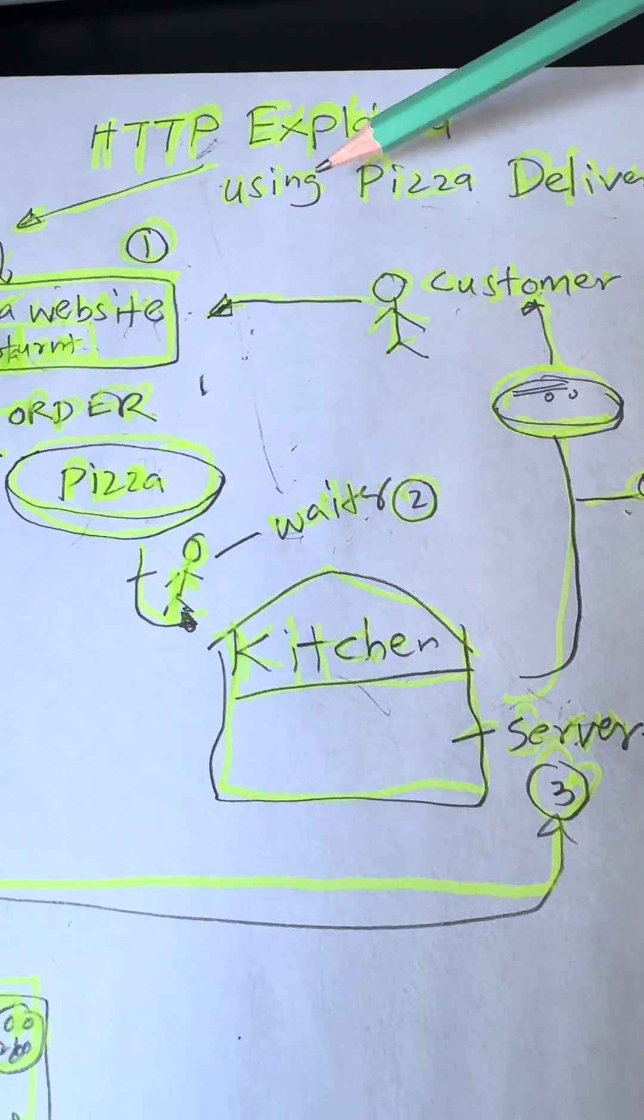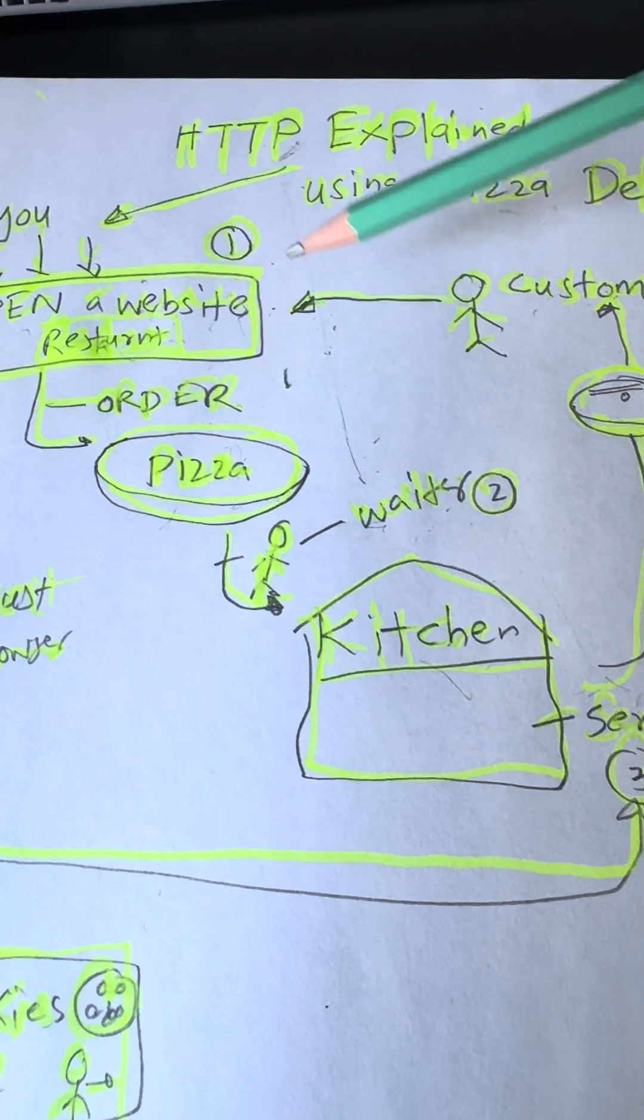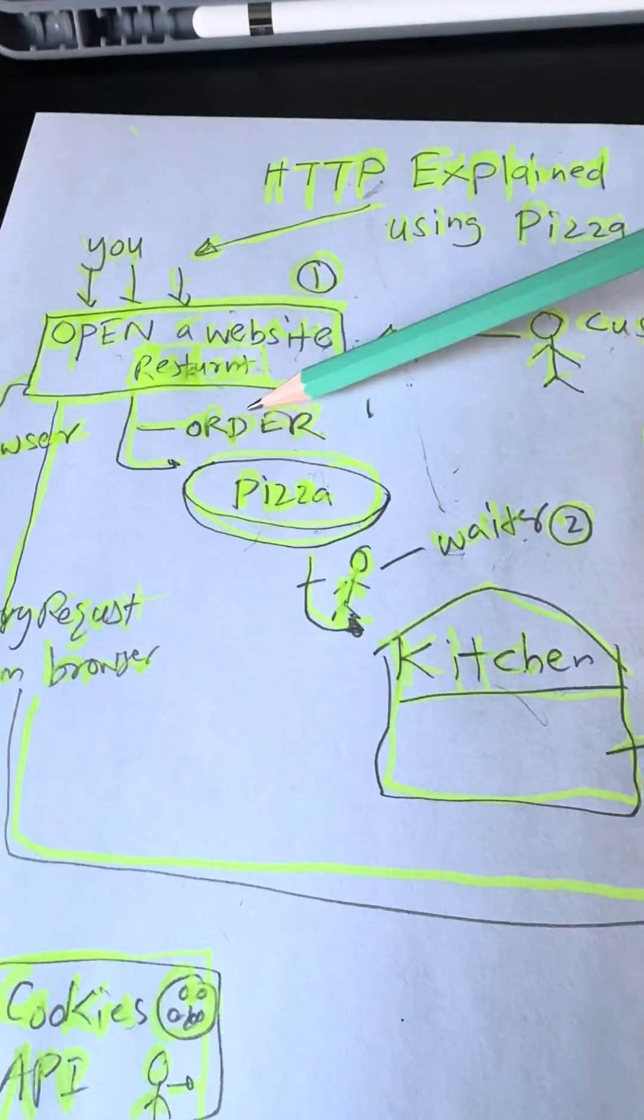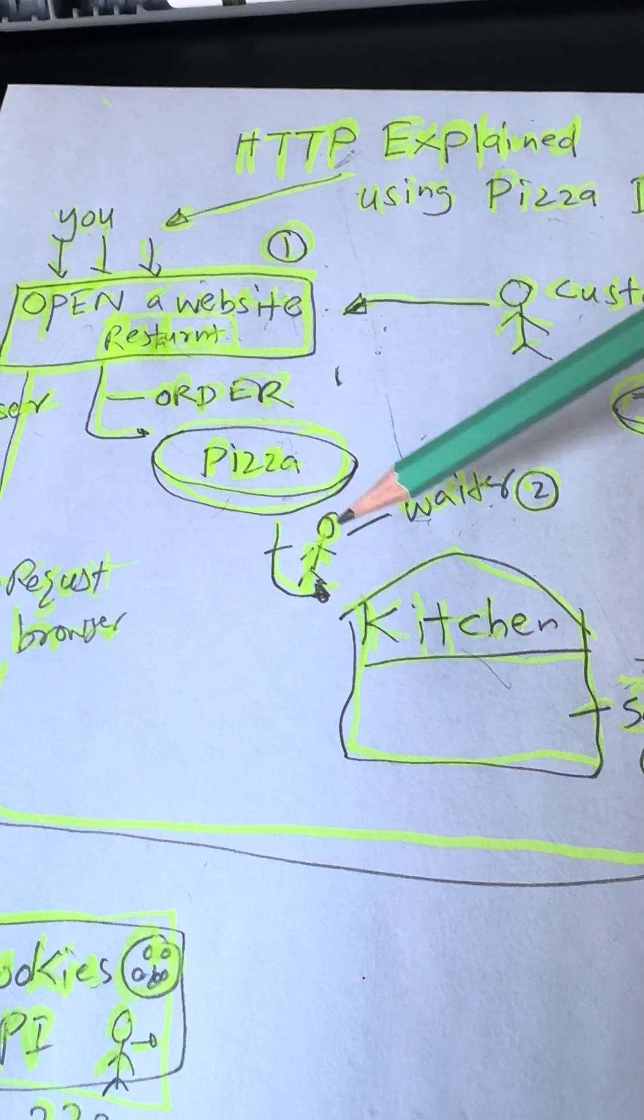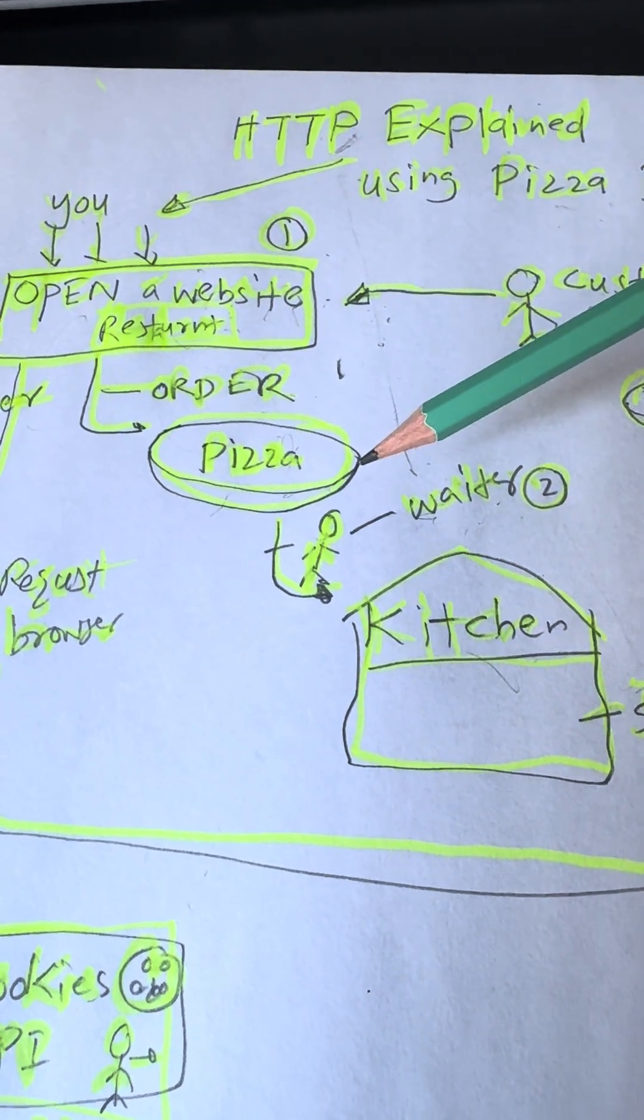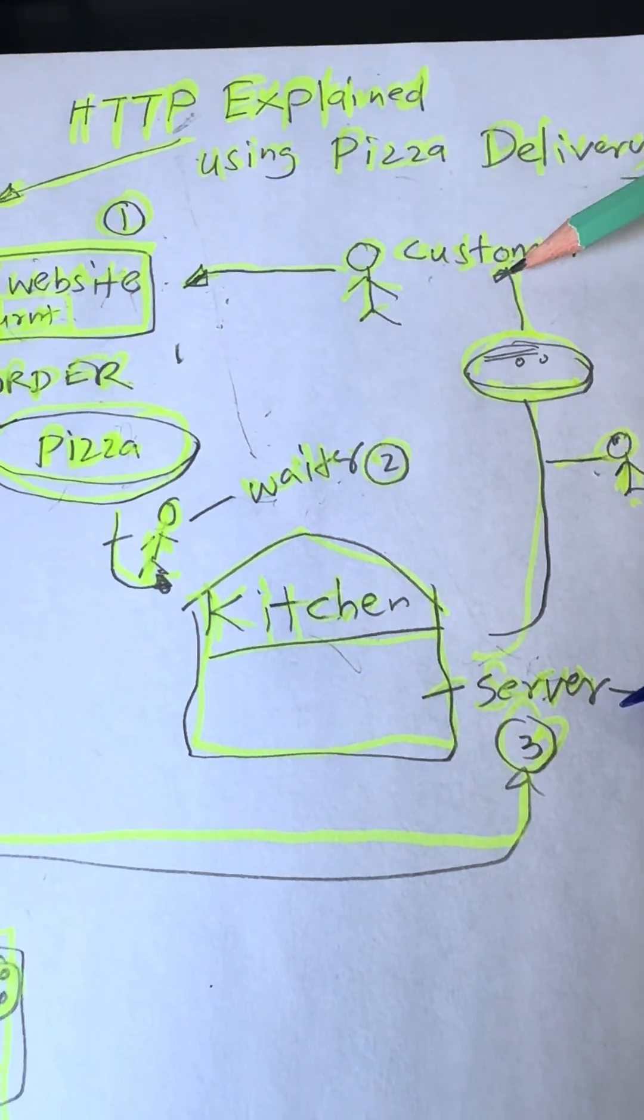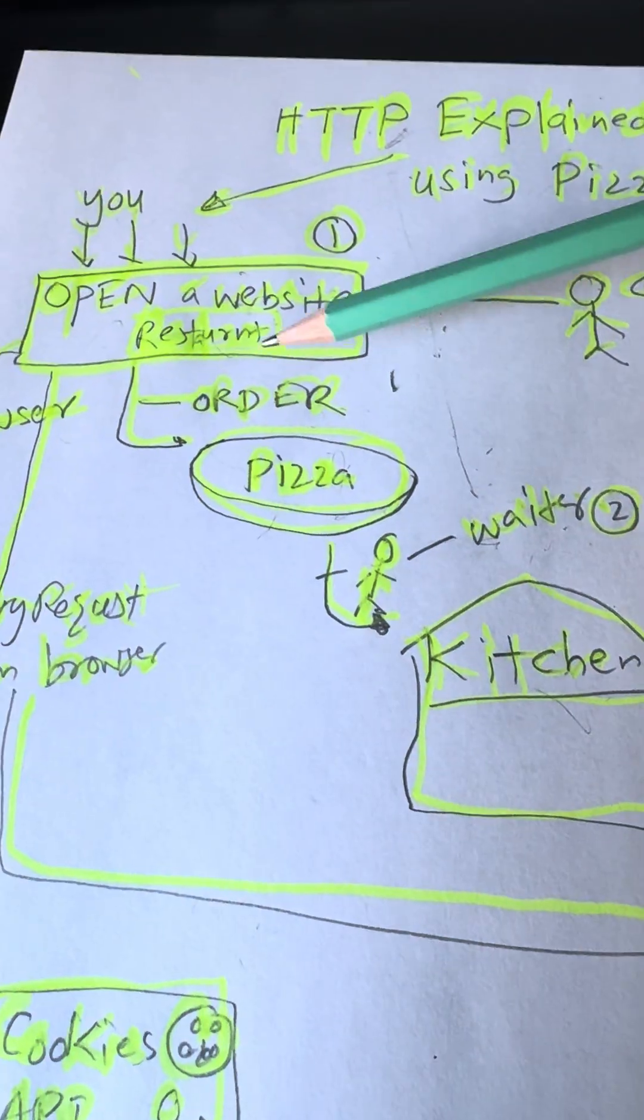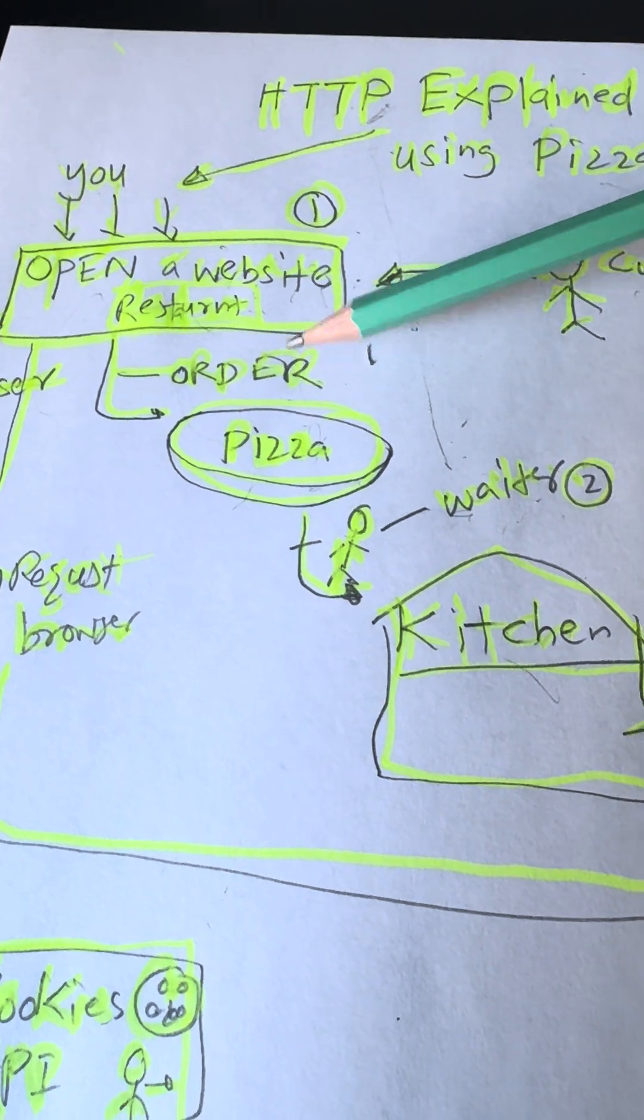HTTP explained using pizza delivery. Every time you open a website, you are basically ordering pizza. Sounds crazy, right? Let me show you. Imagine you are the customer, and the website you visit is the restaurant.